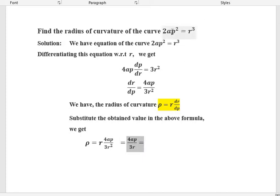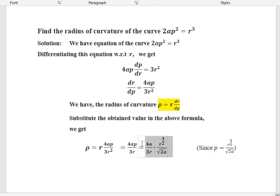See, from the given equation, ρ² = r³/2a. So, ρ equals the square root of r³/2a. That is ρ = r^(3/2)/√(2a). Let us substitute this value in this equation. So we get (4a/3r) times r^(3/2)/√(2a).